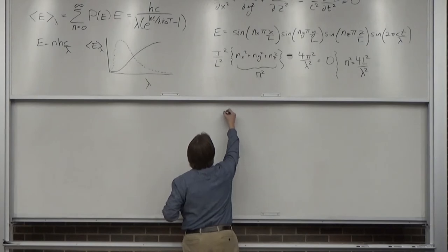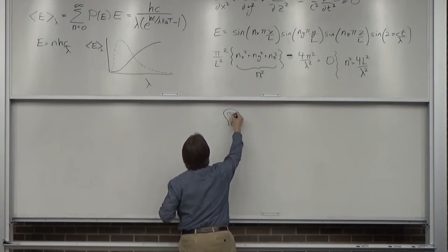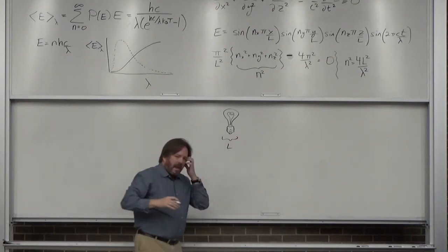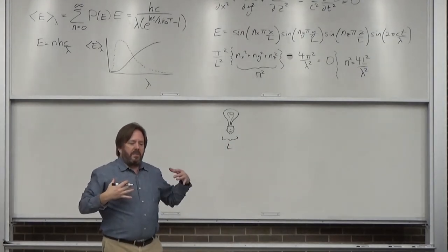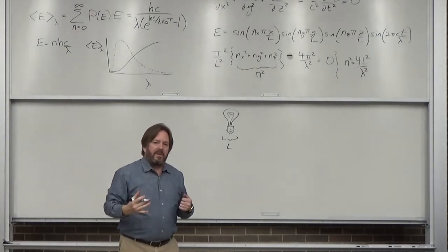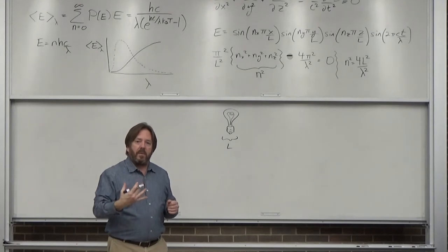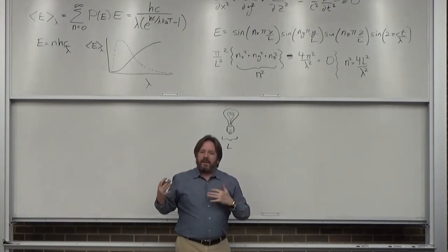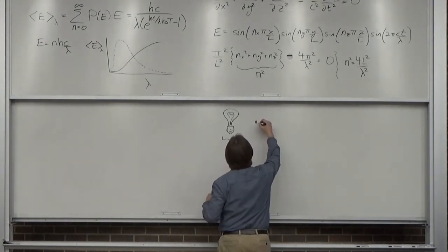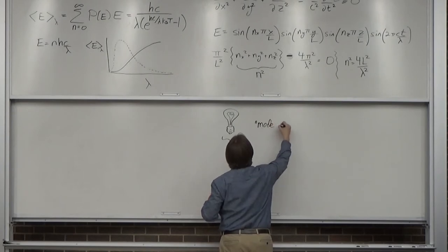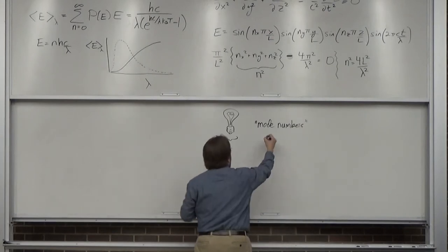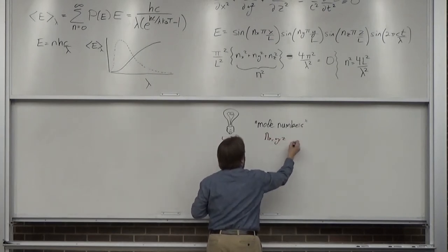We're working on the geometry of a light bulb with dimensions L. To get back to describing the Planck distribution — the intensity spectrum — the nx, ny, nz values are called mode numbers. For low mode numbers you don't have many zero crossings; for high mode numbers you have many. Mode with an 'o' — mode. Node with an 'o' — node. Don't confuse them on exams.